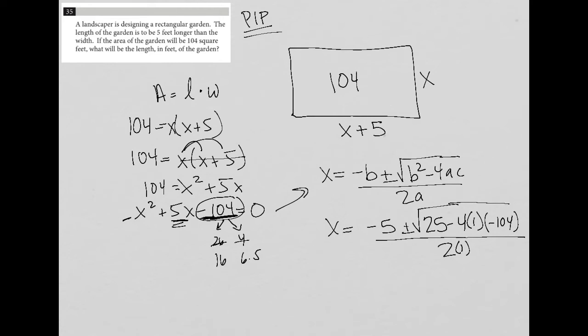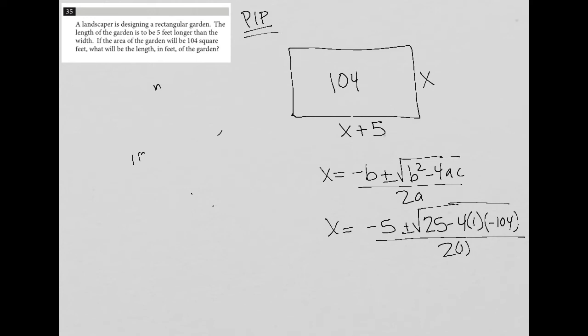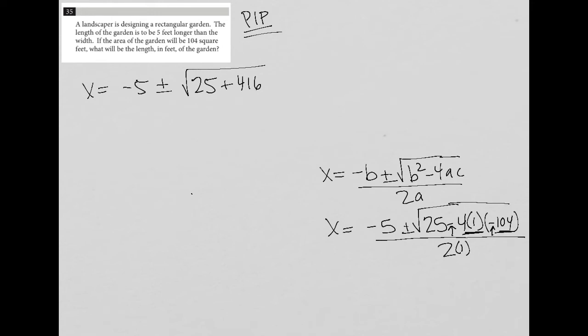I don't even need the rectangle anymore. When I simplify that, I have X is equal to negative five plus minus, and then the square root, so this would be 25 plus, because I have minus and minus here, so negative times negative is positive, and then 4 times 1 is 4, and then 4 times 104 will be 416, so plus 416, all over 2,